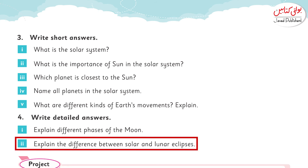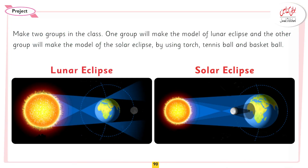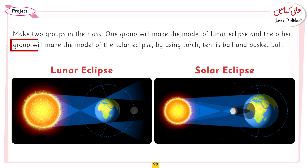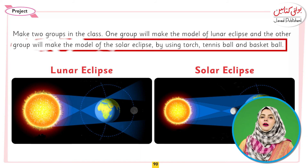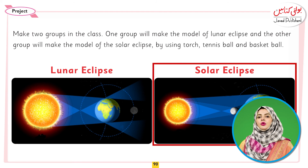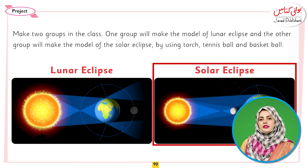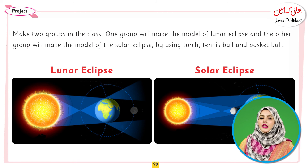Explain the difference between solar and lunar eclipse. One group will make the model of a lunar eclipse and the other group will make the model of a solar eclipse by using a torch, a tennis ball, and a basketball. You can see our topic — lunar eclipse and solar eclipse. We have performed these two activities using a tennis ball and a basketball.